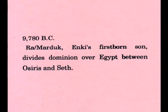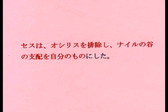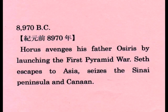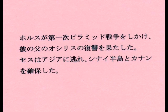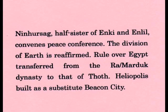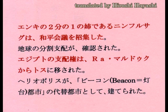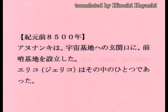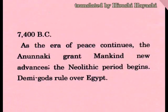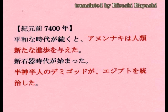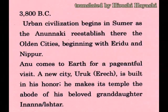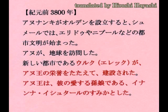このようにして地球を分割してそれぞれが統治したというふうに言われています。人間がその戦争の中に巻き込まれていった。ゼカリア・シッチンの言葉を借りるならば、人間は神々の代理戦争をしていた、ということになります。そしてその代理戦争は、ゼカリア・シッチンによれば現在の今も続いている、というわけです。